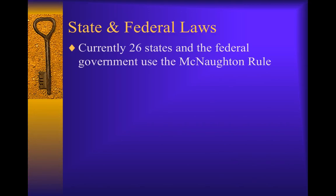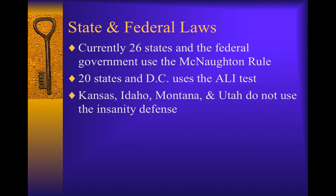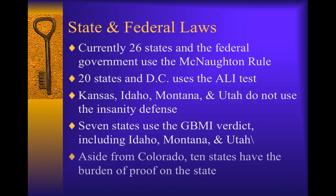Currently, 26 states and the federal government use the McNaughton law or rule. 20 states and the District of Columbia use the ALI test. As stated earlier, Kansas, Idaho, Montana, and Utah do not use the insanity defense anymore. Seven states use the GBMI verdict, including Idaho, Montana, and Utah — so while those three states abolished the insanity defense, they have something very similar. Aside from Colorado, ten states have the burden of proof on the state.